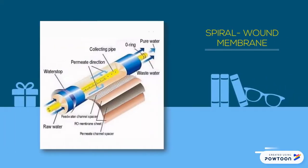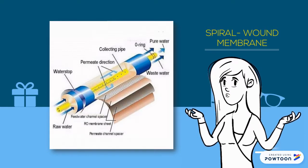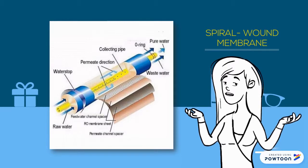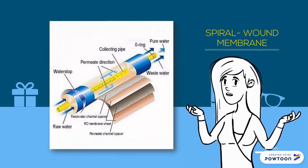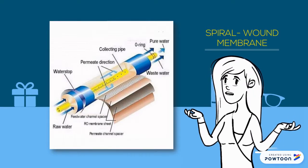Spiral wound membrane consists of membranes, feed spacers, permeate spacers, and a permeate tube. First, a membrane is laid out and folded in half with the membrane facing inward. A feed spacer is then put in between the folded membranes forming a membrane sandwich, providing space for water to flow between the membrane surfaces. Next, the permeate spacer is attached to the permeate tube, and the membrane sandwich is attached to the permeate spacer using glue. The process is repeated until all required permeate spacers have been attached, and the finished membrane layers are wrapped around the tube, creating the spiral shape.